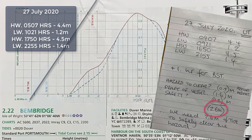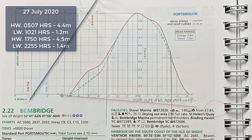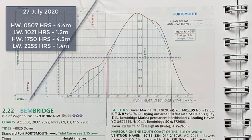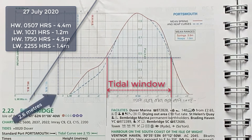We draw a line from 2.6 metres up to our linear line between high and low water on that day, then draw it across the tidal curve. Where the line crosses the tidal curve, we know we have a minimum of 2.6 metres of water. We then run down from that line onto the time scale at the bottom, and that shows us the window during that tidal sequence where we have at least 2.6 metres of water — enough to go over that mud bank with 50 centimetres of safety.